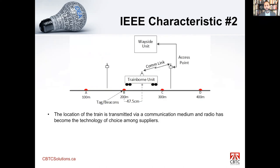Once the train-borne equipment has established its position, it transmits that to the wayside using a communication link — usually a radio link. There's a radio onboard the train, and access points are installed along the guideway, perhaps every 500 to 1,000 meters. The train transmits its position to the wayside unit using this radio medium. Radio has become the technology of choice, although some suppliers use inductive loops. This bi-directional, two-way communication link is characteristic number two.